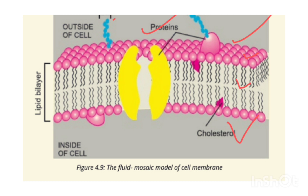Now there is a name which is used for this type of model, and that is the fluid mosaic model. Yeh cell membrane ki structure ka name hai jo mostly MCQs mein paper mein aata hai — fluid mosaic model. Now why is it termed as a fluid mosaic model? Because the lipids are working in a flexible manner, so it's known as like a fluid, flowing manner.